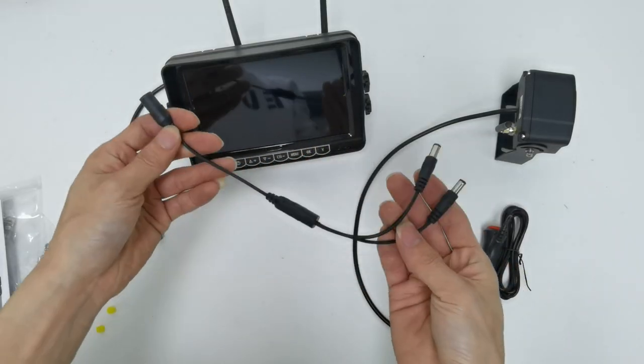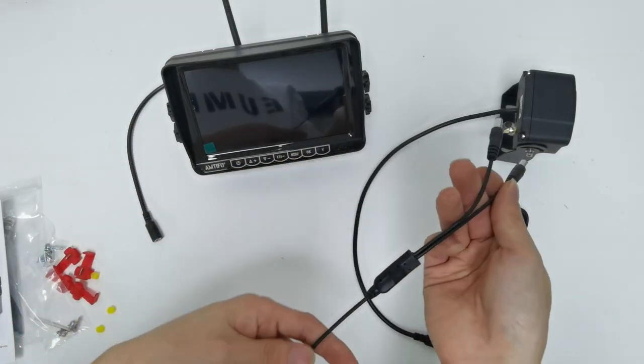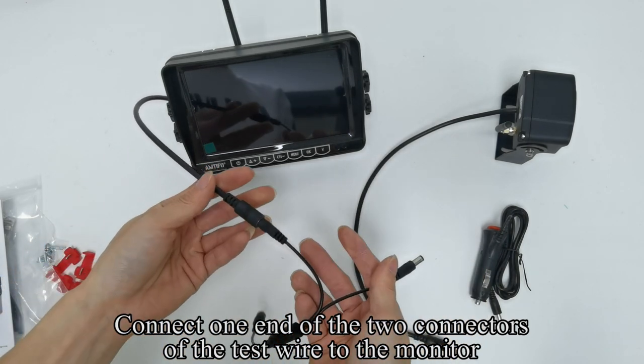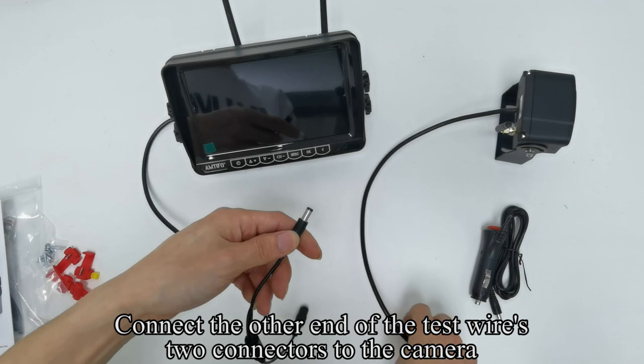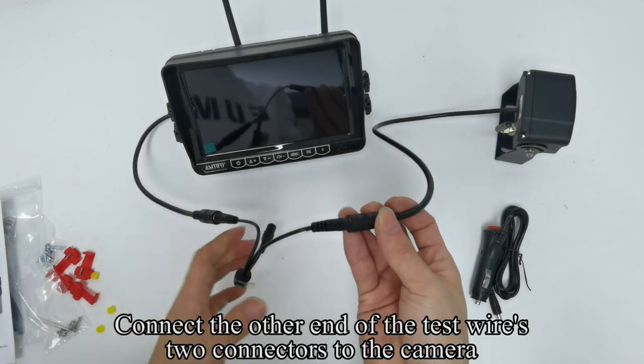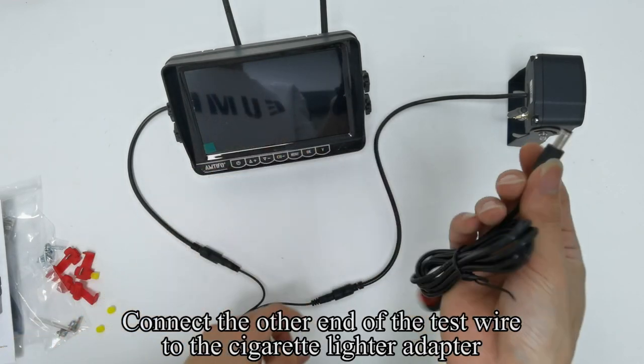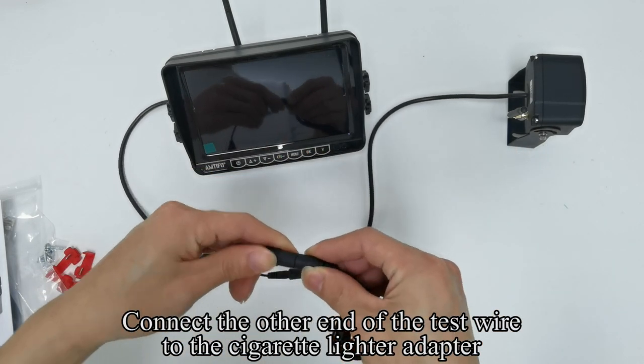Pick up the test wire. Connect one end of the two connectors of the test wire to the monitor. Connect the other end of the test wire's two connectors to the camera. Connect the other end of the test wire to the cigarette wire adapter.